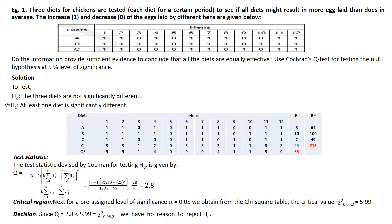Our conclusion is that the three diets are not significantly different. The null hypothesis is true. They are not significantly different — whichever diet is used, the same result is obtained. In this way we can bring about a conclusion. I hope this is helpful in solving your numericals regarding the Cochran Q test. It is simply the same as ANOVA but much easier. Thank you.